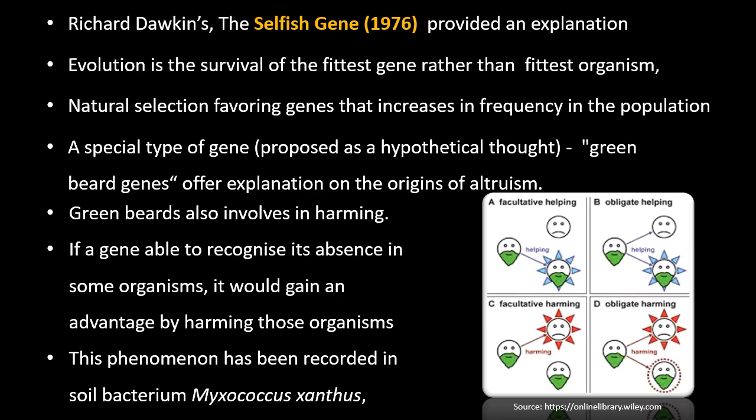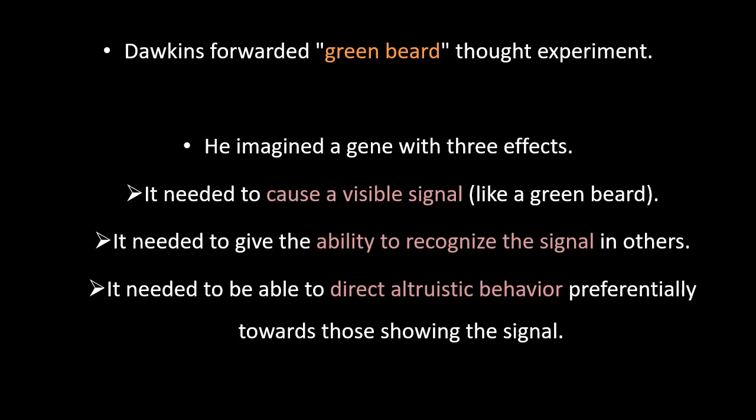In the second part of the picture, individuals recognized those without the green beard gene and are harming those individuals, thereby favoring others. This phenomenon has been recorded in the soil bacteria Myxococcus xanthus, where a mismatch at the green beard genes causes individuals to inject a lethal toxin. To highlight how a gene for altruism could evolve, Dawkins forwarded the green beard thought experiment.